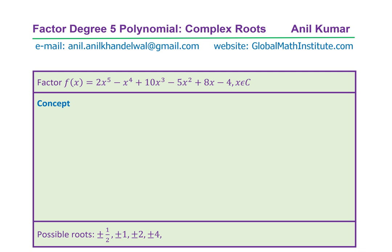In this video, I am going to discuss the technique of factoring a degree 5 polynomial. This polynomial also has complex roots. The example is to factor the function f(x) = 2x⁵ - x⁴ + 10x³ - 5x² + 8x - 4, where x belongs to complex numbers.